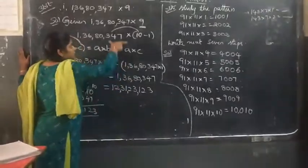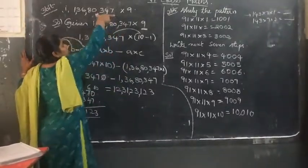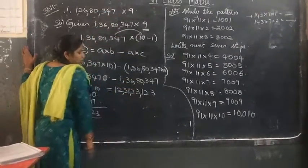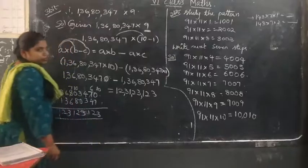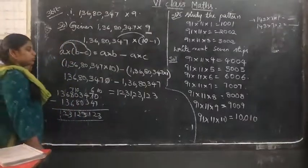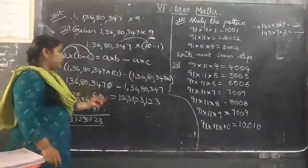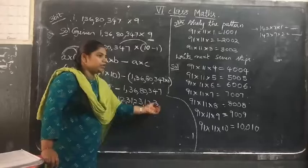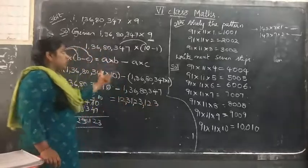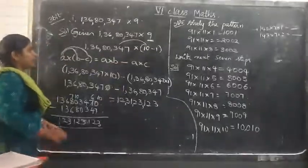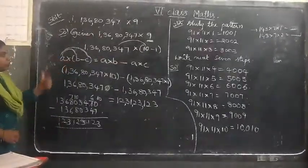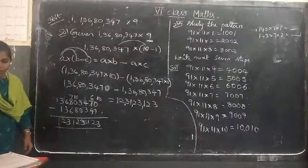So after solving this problem, what pattern did we get? 1, 2, 3 — 1, 2, 3 — 1, 2, 3. That is 12 crores, 31 lakhs, 23,123. This is how you multiply mentally using the distributive property.